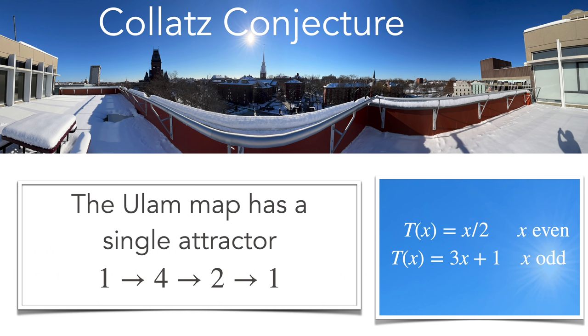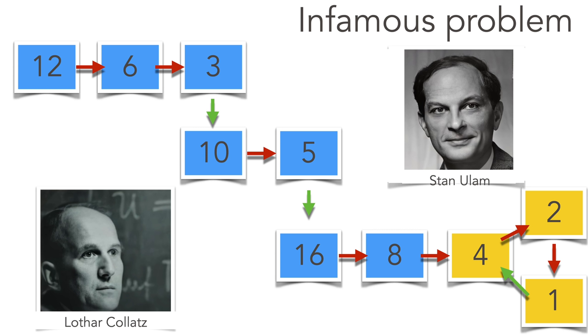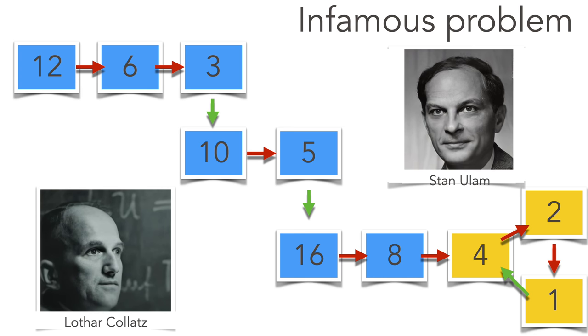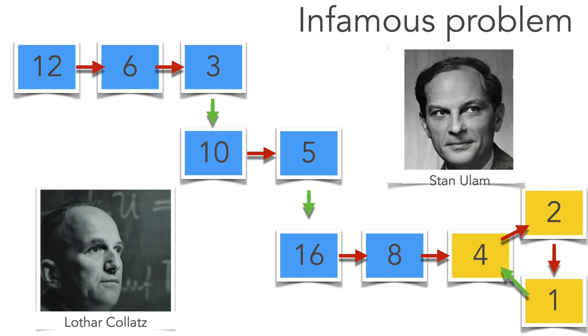The Collatz conjecture deals with the Ulam map which divides a number by two if it's even and multiplies by three, adds one if it's odd, and the question is whether everything is attracted by the one four two one cycle. So here we see an example with 12. Start with 12. You divide by two until you reach three, then you multiply by three plus one, you get ten, and so on until you reach the attractor. So you see also Lothar Collatz, a German mathematician, and Stan Ulam who made this problem popular in the west.